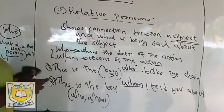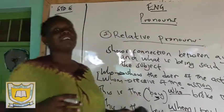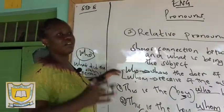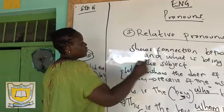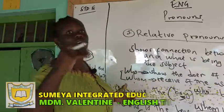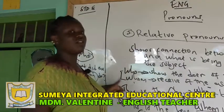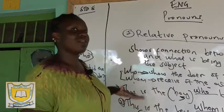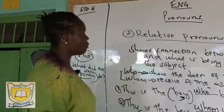So: 'This is the boy who broke the chair' — what did the boy do? He broke the chair. And 'This is the boy whom I told you about.' When filling blank spaces with who or whom, ask yourself 'what did the person do?' If you get an answer, use 'who'. If you don't get an answer, use 'whom'.